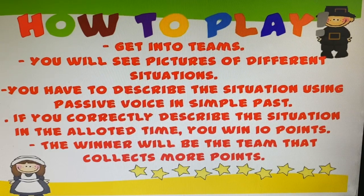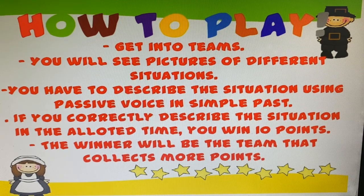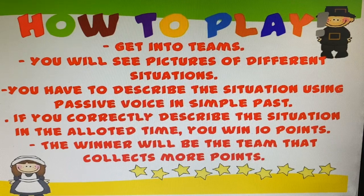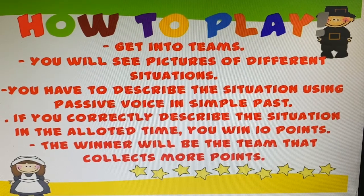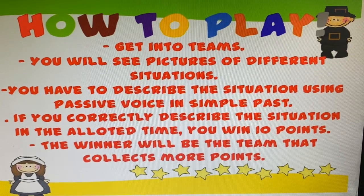The first activity is a game where students get into teams and receive pictures of different situations. The task is to describe the situation using the passive voice — for example in the past simple. This can vary: it can be past simple or present simple, depending on what you as a teacher want to practice. If they correctly describe the situation in the allotted time, they win 10 points. The winner is the team that collects the most points.